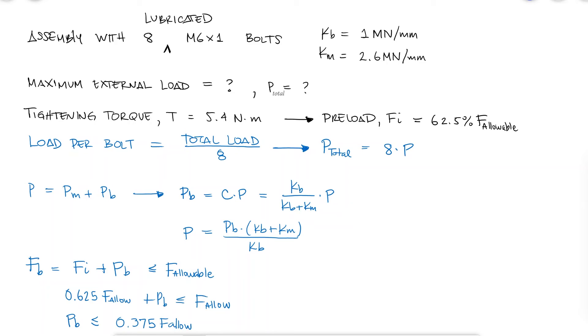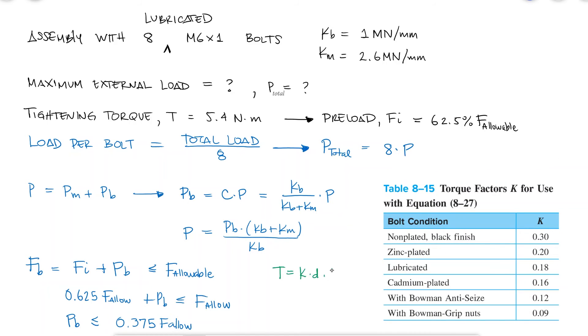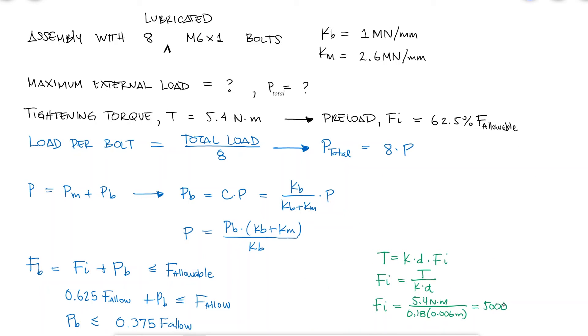The relationship between the input torque and the preload Fi is given by the expression T equal to KD Fi, with a K that corresponds to lubricated threads. With a 0.18 for K and a nominal diameter of 6mm, we find that the preload is 5 kN.